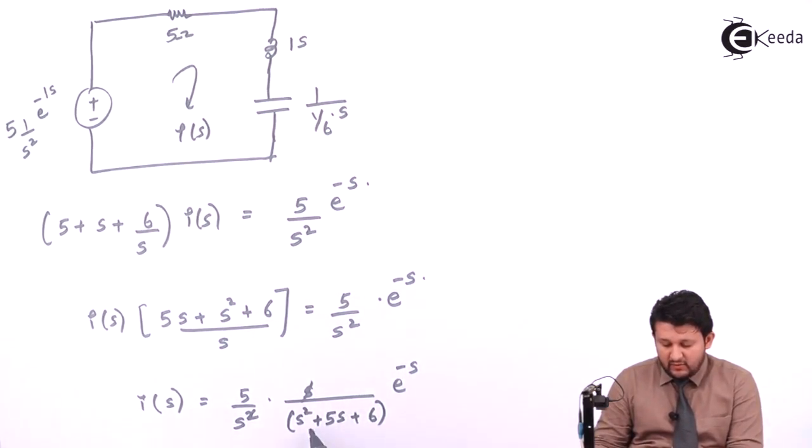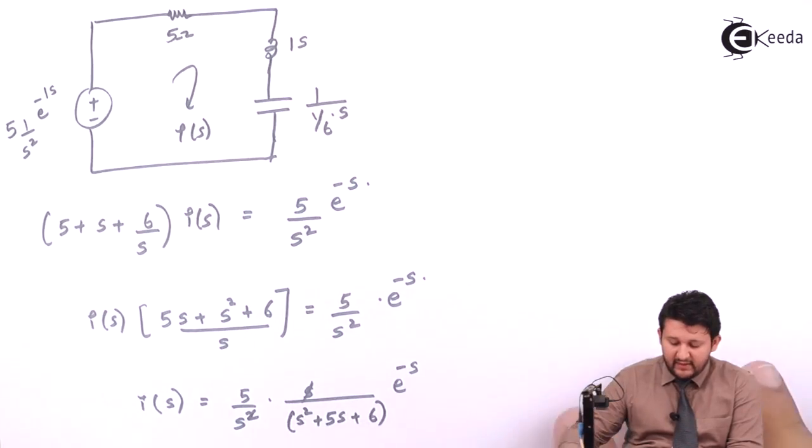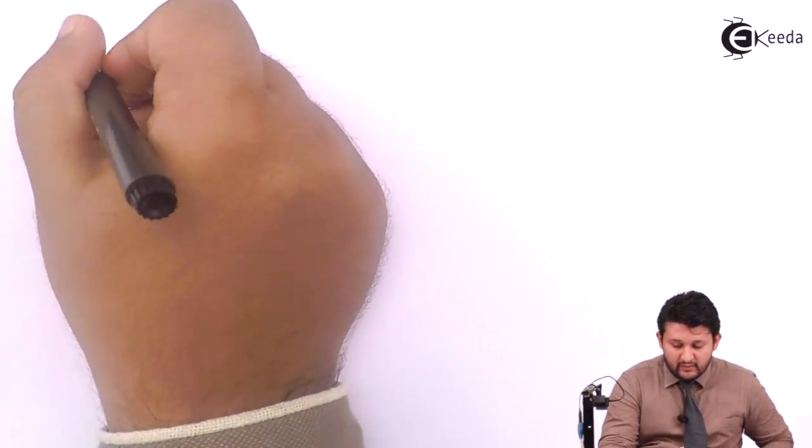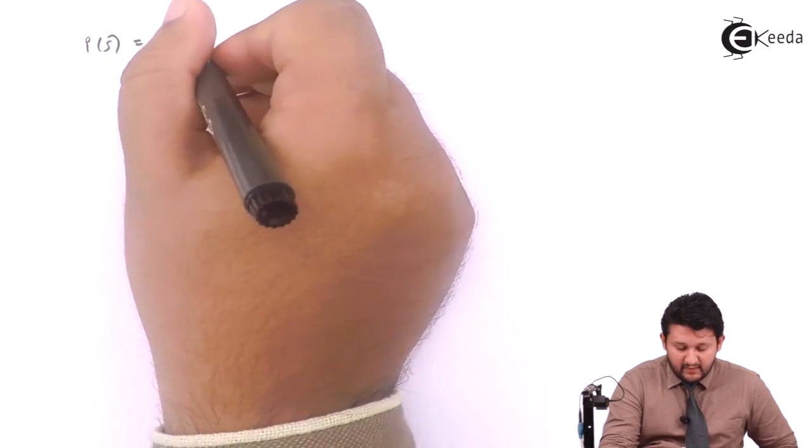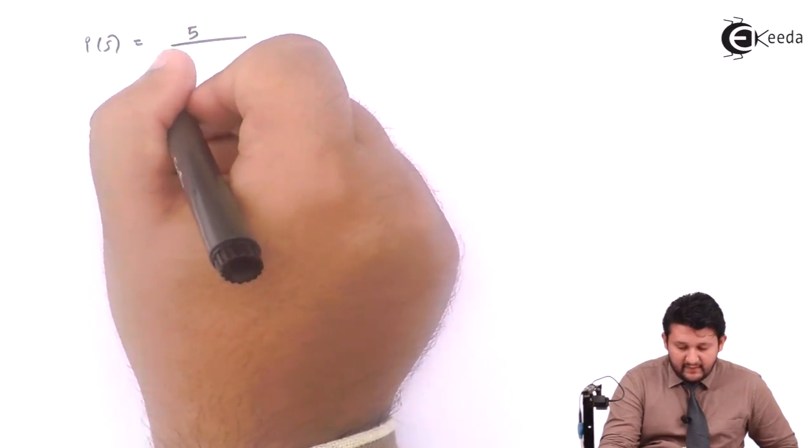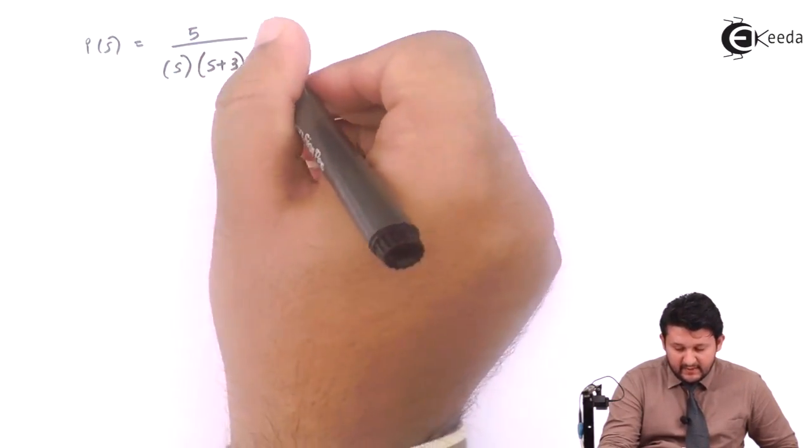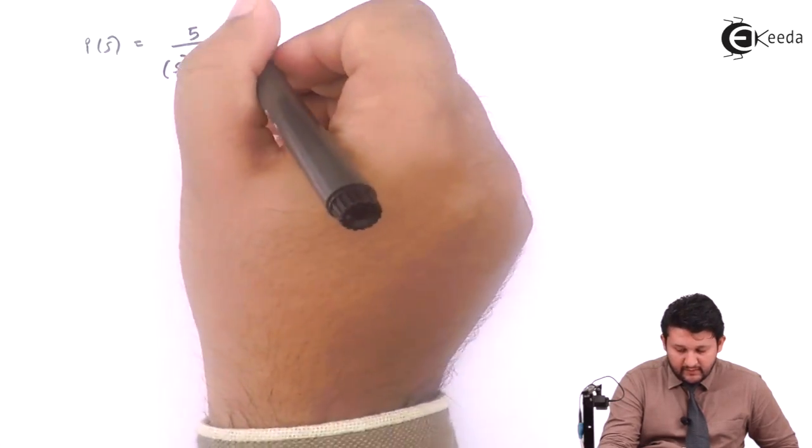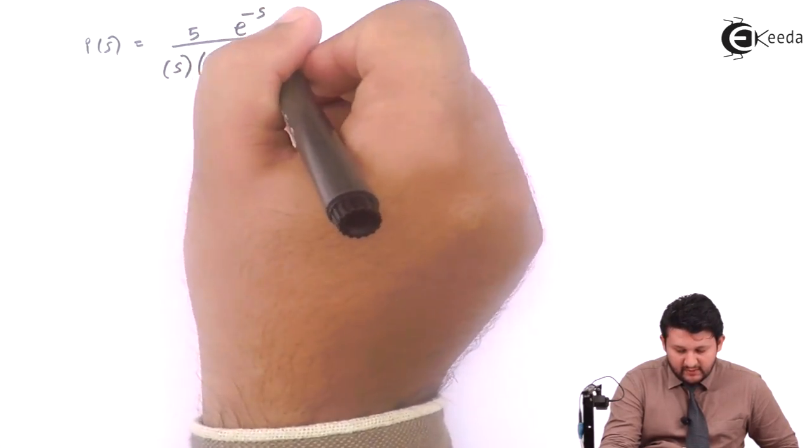This gets cancelled, so apply the factors for it. Use a calculator, you get the factors that is nothing but the 3 and 2. So your I of S will be equal to phi upon S into S plus 3 into S plus 2 into e raise to minus of S.